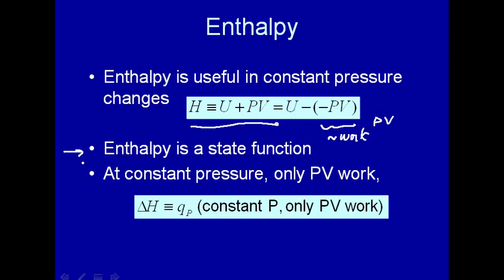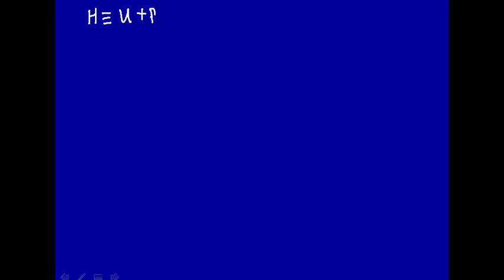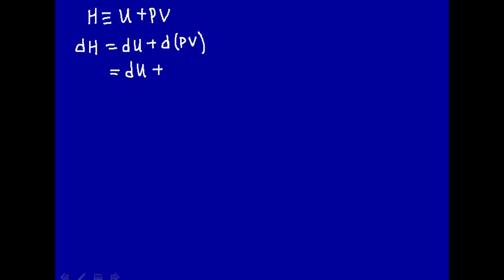Enthalpy is a state function, and what we're going to show now is that at constant pressure and only PV work, delta H is equal to the heat transferred to or from the system at constant pressure and only PV work. So let's start. We're going to start with the definition again: enthalpy is defined as U plus PV. Now let's take the differential and look at changes. An infinitesimal change in H will be dU plus the infinitesimal change in PV. Just like derivatives, the differential of a sum is the sum of differentials, so this is dU plus P dV plus V dP.